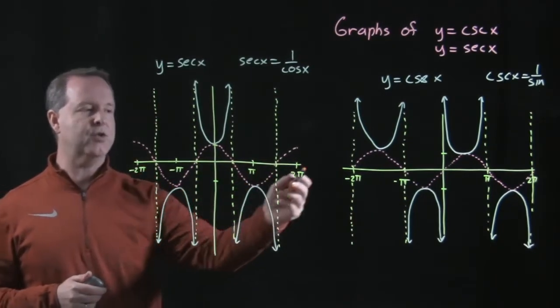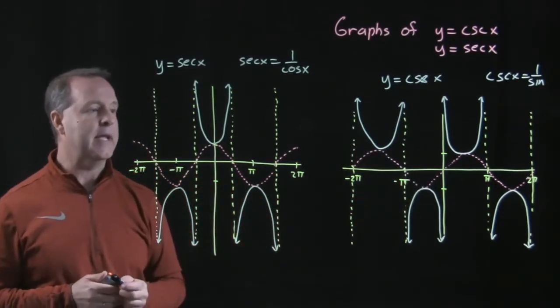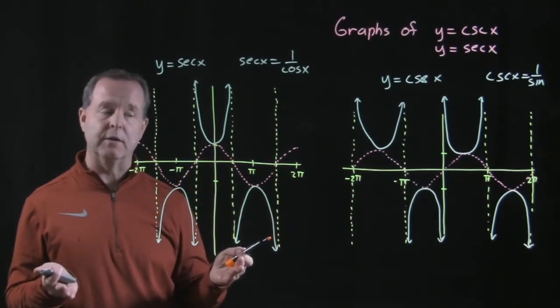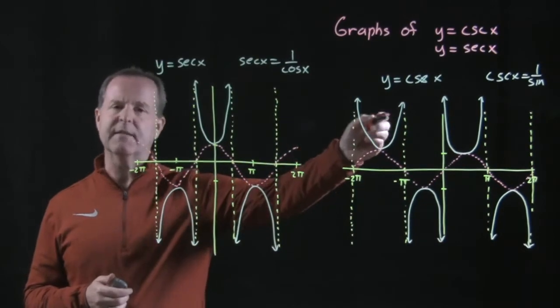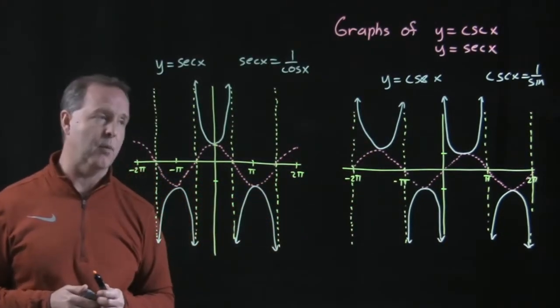So notice that I drew in in pink or red, depending on what color you see right there, is that I have our typical sine curve. The cosecant then is just the reciprocal of each of those points at any one particular point in time.